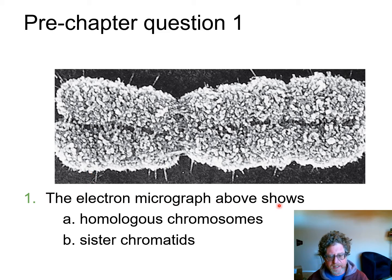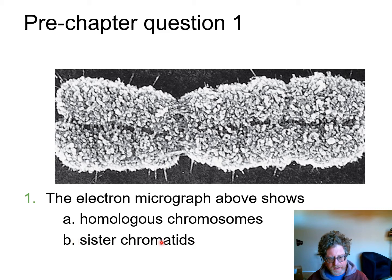The electron micrograph above shows a structure that is narrow in the middle at the waist, with two separate structures attached together. It represents one chromosome consisting of sister chromatids connected in the middle.